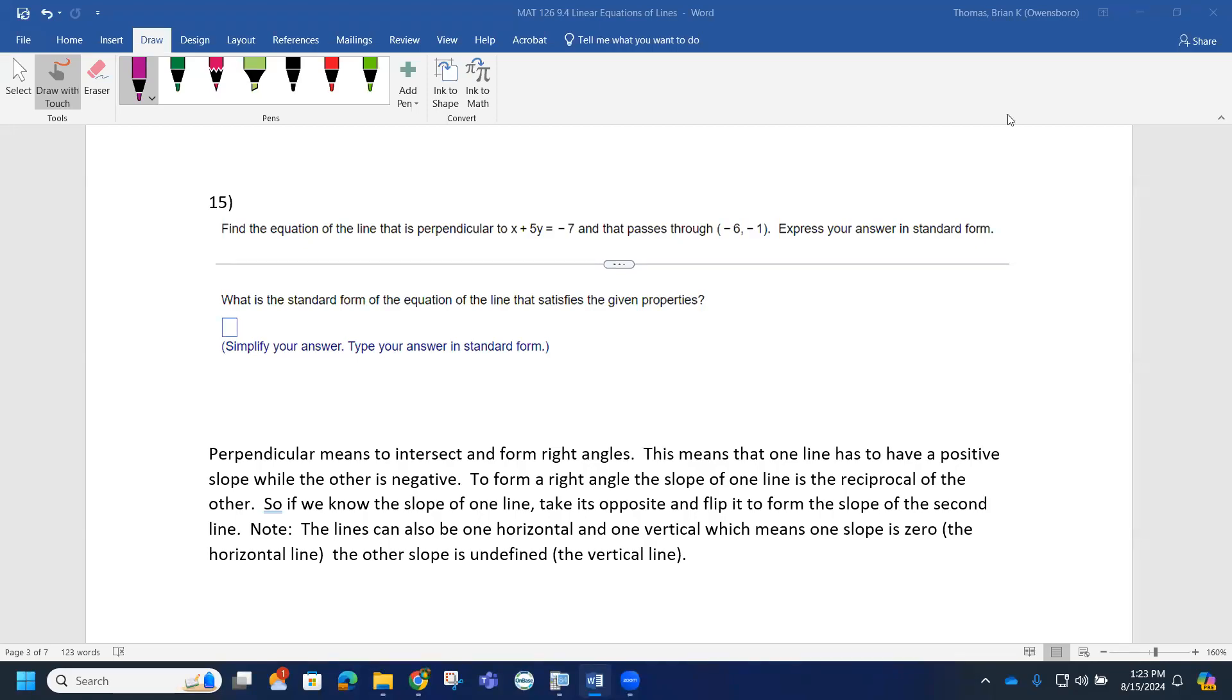Question 15 says, find the equation of a line that is perpendicular to the line with the equation x plus 5y equals negative 7 and passes through the ordered pair negative 6, negative 1. Express the answer in standard form.